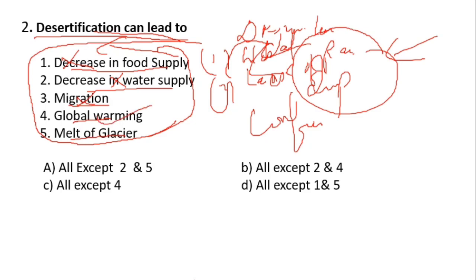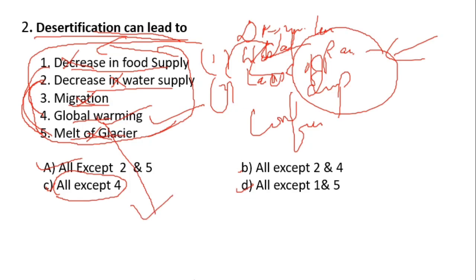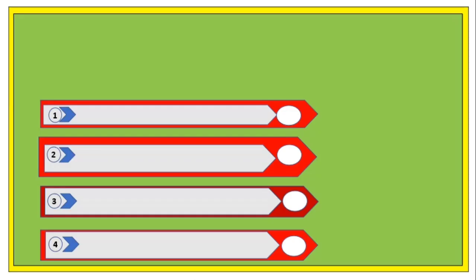Looking at the options: decrease in food supply — no; decrease in water supply — no; migration — no; global warming — yes; melting of glaciers — not related. The correct answer is 'all except four,' meaning global warming is a cause of desertification. Be very clear with questions and options.